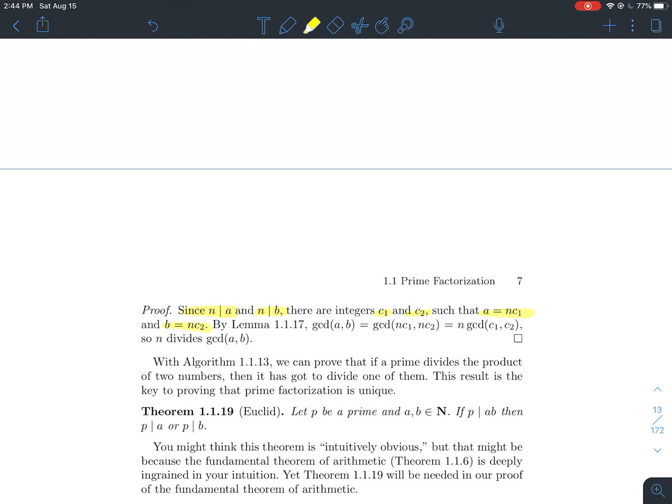a is n times c1, b is equal to n times c2. And by the previous lemma, the GCD of a and b, if a is equal to nc1 and b is equal to nc2, this is the same thing as the GCD of these guys. Now factor that n out. So n times the GCD of c1 times c2. So in particular, I've got n times some integer is equal to the GCD of a, b. Therefore, n divides this number. And that's what this says.